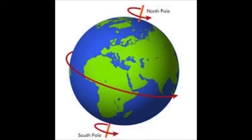Earth spins around and around — a never-ending cycle that shapes everything we do here on Earth. The Earth is constantly moving. As Earth turns around, part of it faces the sun, and part of it faces away from the sun. The sun is a star that provides light, heat, and energy for the Earth. Can you guess what cycle happens when our part of Earth faces the sun and then rotates to face away from the sun?